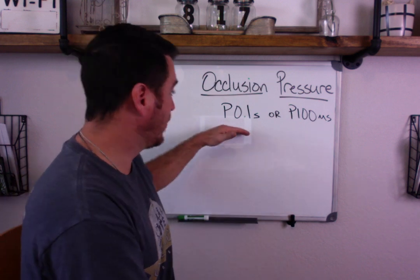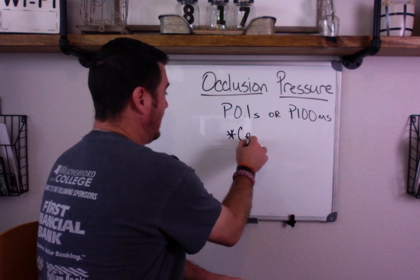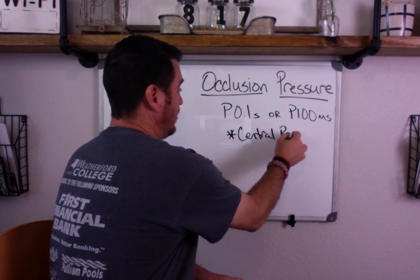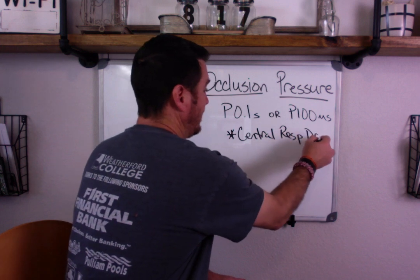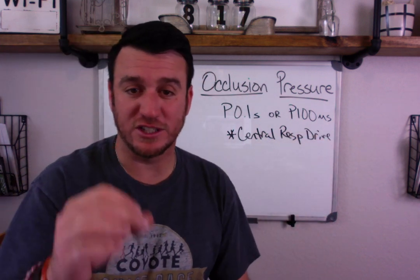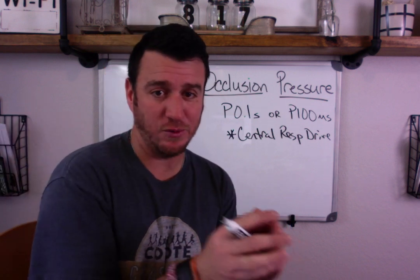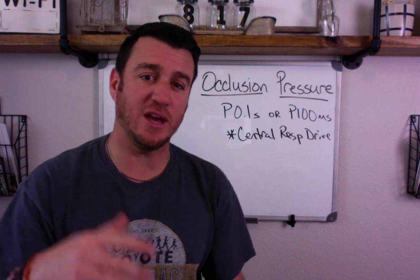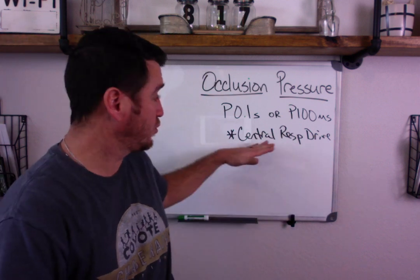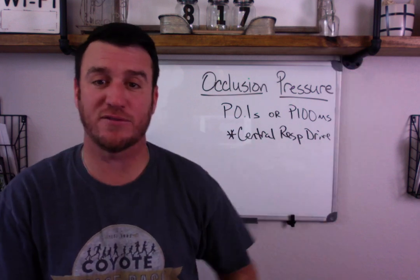This is important because it's a great indicator of a patient's central respiratory drive. Remember, the central drive to breathe is proportionally related to CO2. So if you have a patient with a high CO2, then from the central respiratory center's drive-to-breathe level, you're going to have an increased drive to breathe.